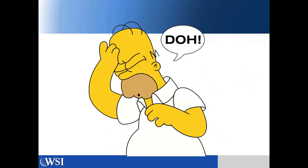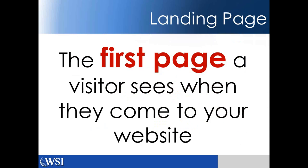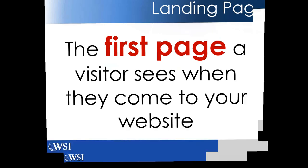The number one common mistake that most brands make when doing paid search marketing is that they send traffic to the homepage of their website. According to Marketing Sherpa, 44% of clicks for B2B companies are directed to the business's homepage. What you want to do instead is send traffic to something called a landing page — essentially the first page a visitor sees when they come to your website. We're talking about a landing page that's designed and developed strictly for the purposes of getting a conversion.